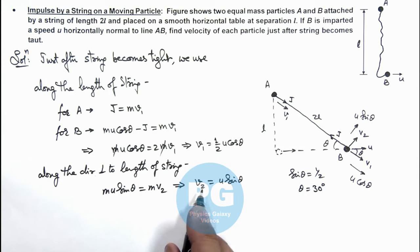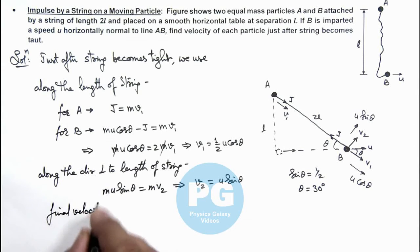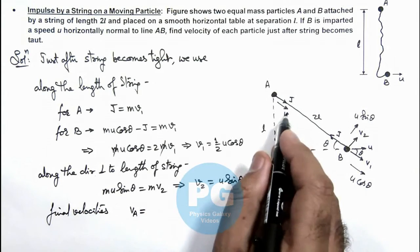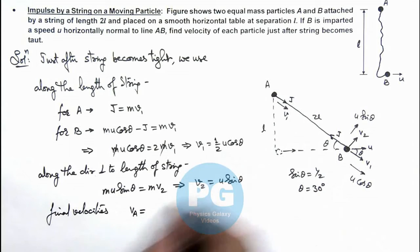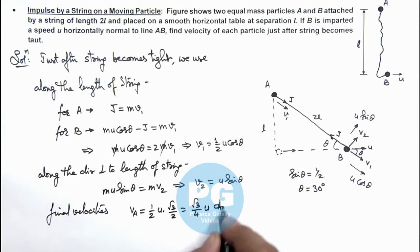So in this situation we can write final velocities for A, we can write it is v1 only that is equal to half u cos 30 degree we can write as root 3 by 2, so the result is root 3 by 4 u. That is one result of the problem.